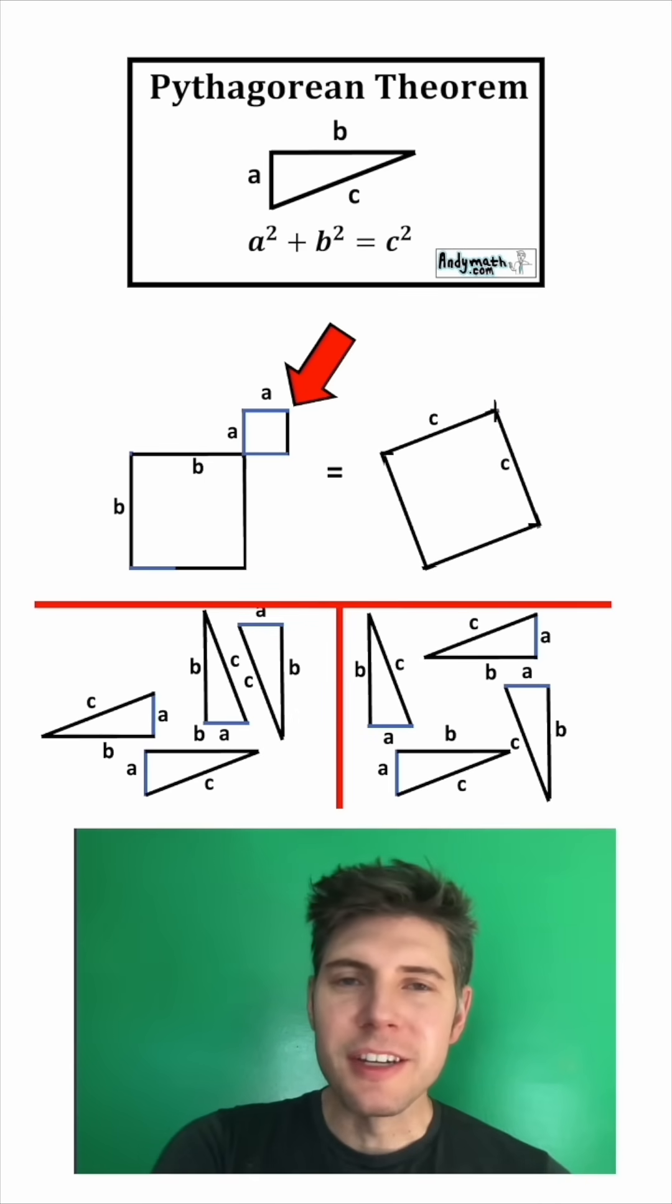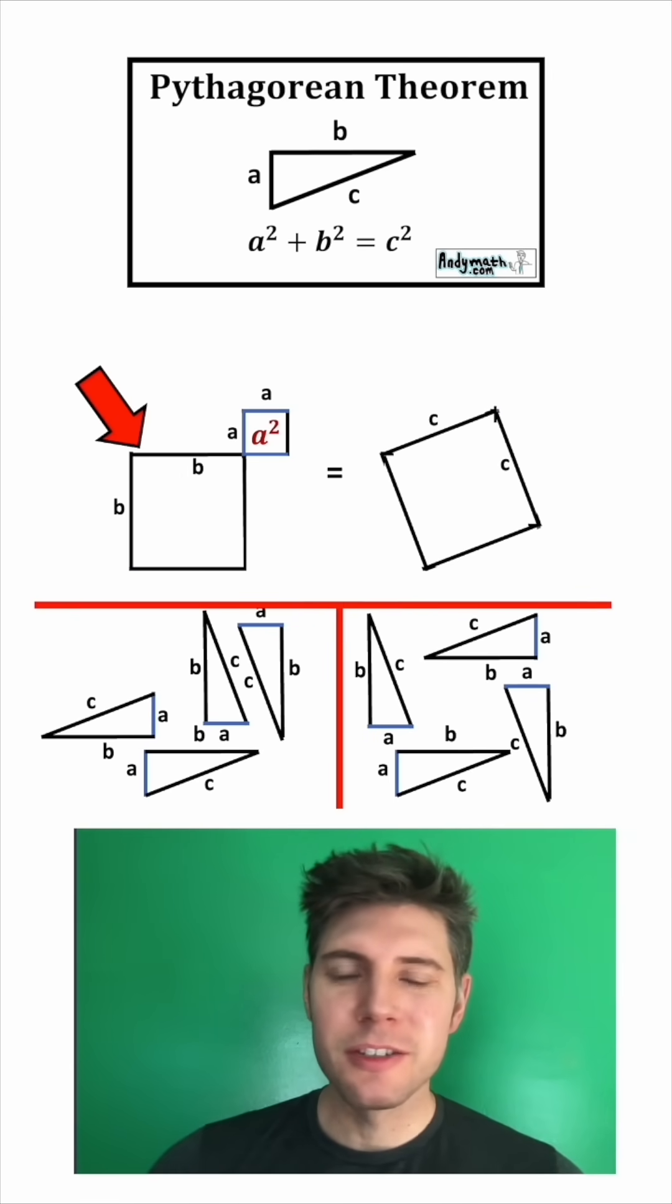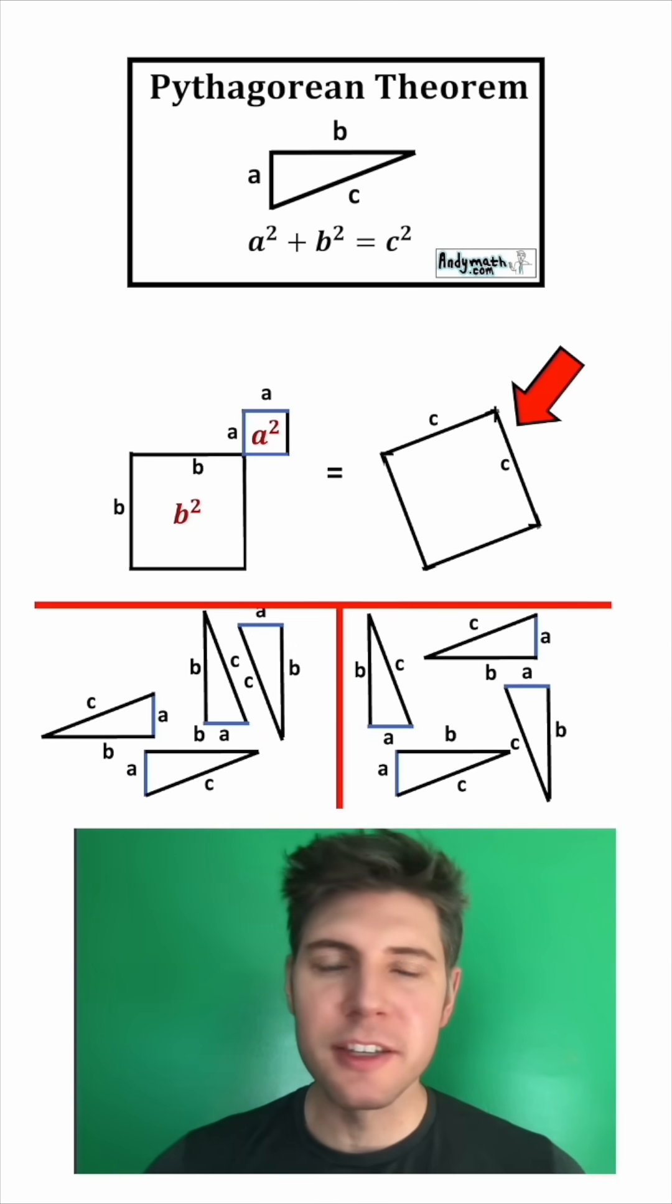So this square right here is an A by A square. So the area of it is A squared. This square has sides B, so its area is B squared. And this square has sides C, so its area is C squared.